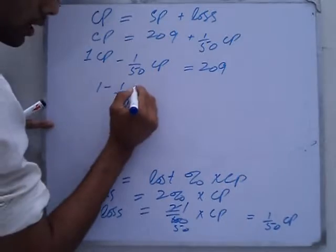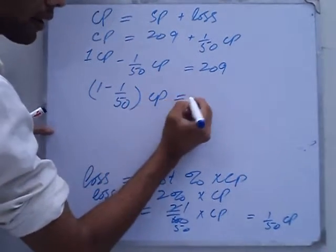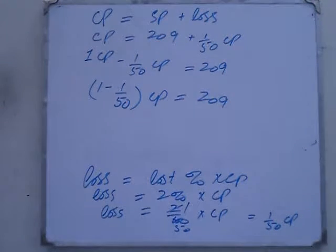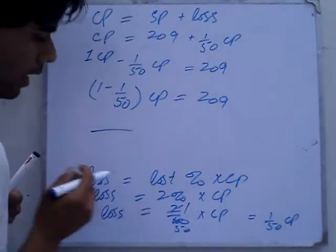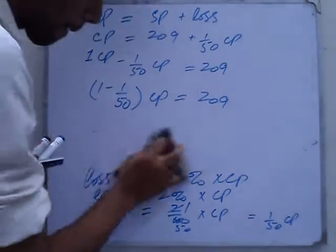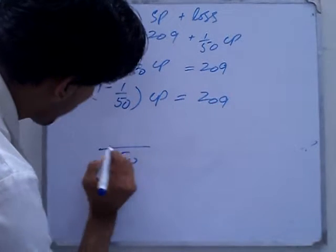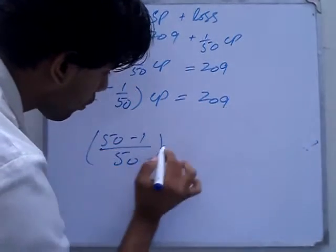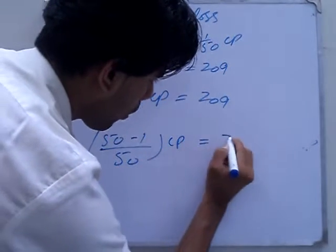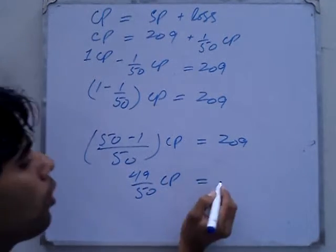Taking cost price as common: cost price into (1 minus 1 over 50) equals 209. LCM is 50, so we get 50 minus 1 over 50 into cost price equals 209. That gives us 49 over 50 into cost price equals 209.